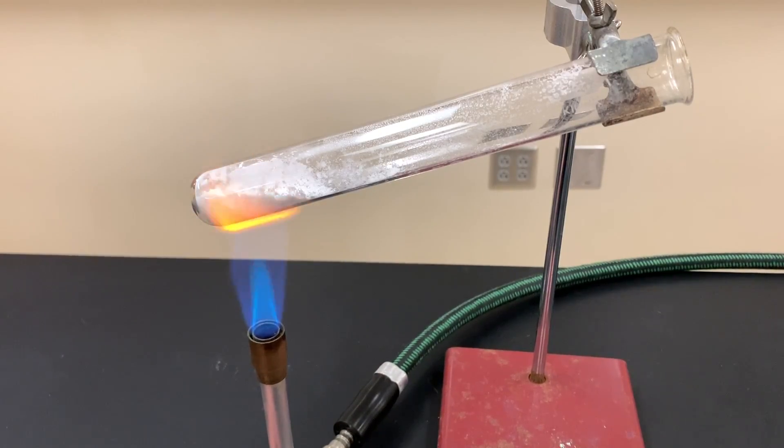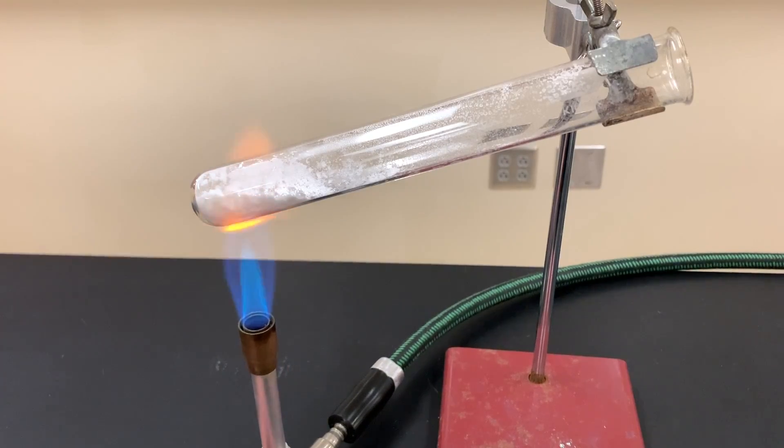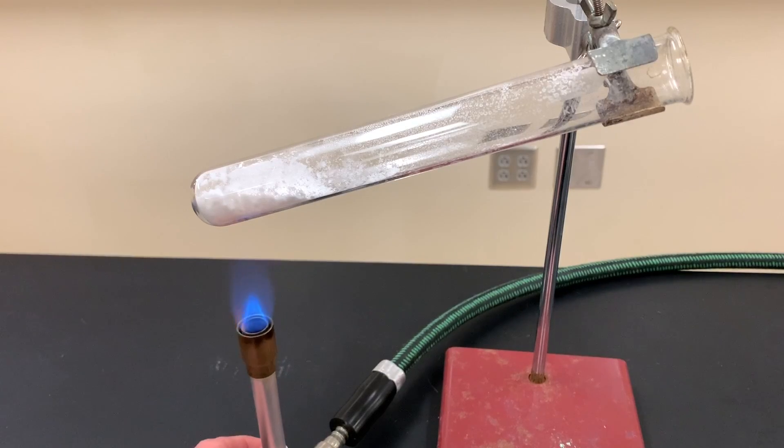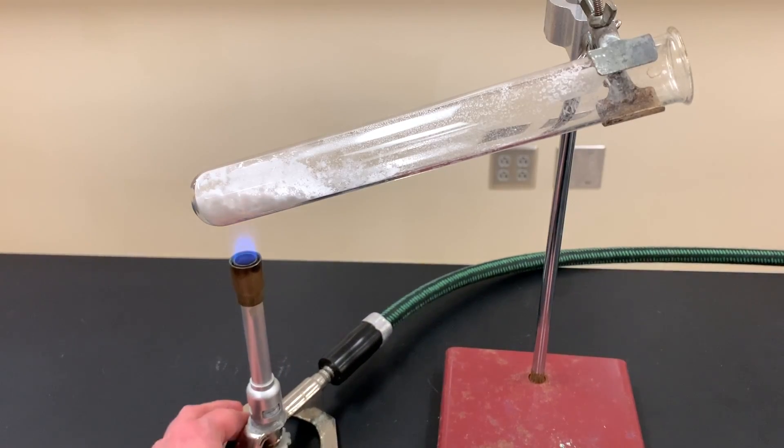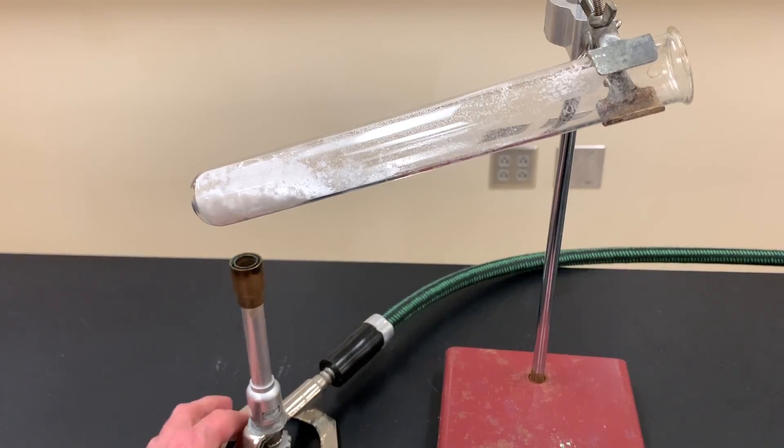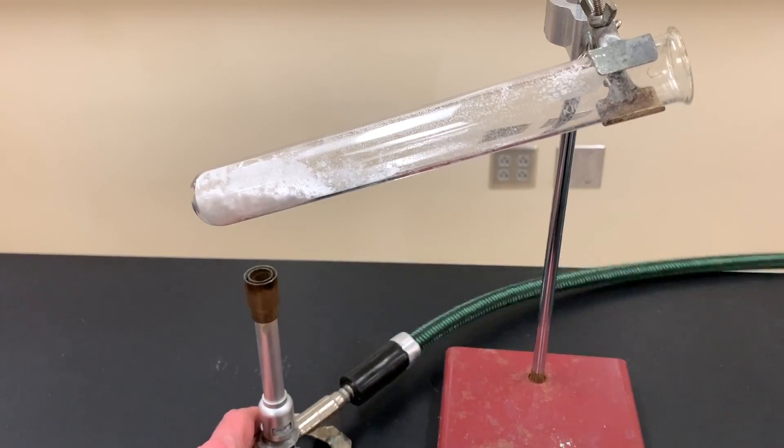It's best to turn down the Bunsen burner to a lower height. You can sometimes even turn off the Bunsen burner from the bottom. The other thing too is remember to turn off at the gas jet by turning it perpendicular.